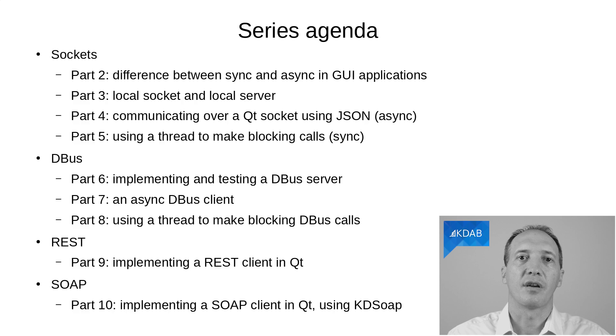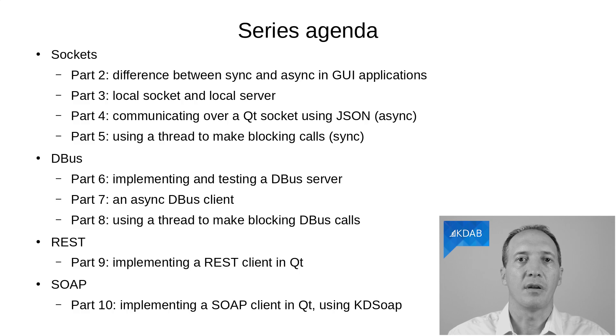Another difference is that sockets can be used on the local machine — so two processes on the same machine — or all over the network with TCP sockets, whereas DBus is only used on the local machine. It technically has code for TCP sockets, but that is not supported by the authors.